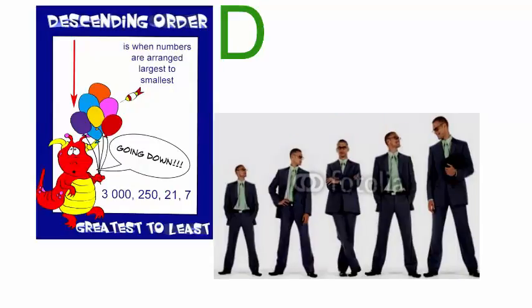Descending order means going down or going from big to small. If your answer is descending order, then you will write a D.